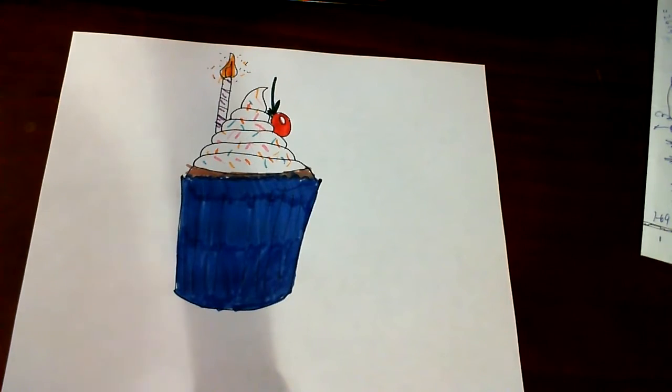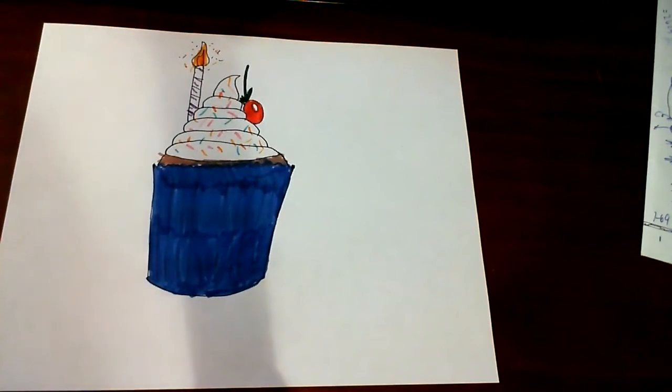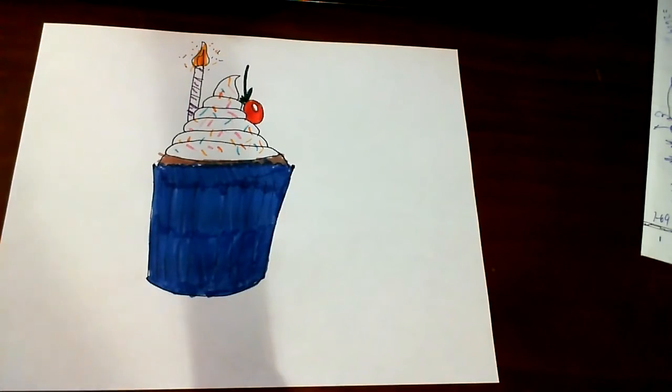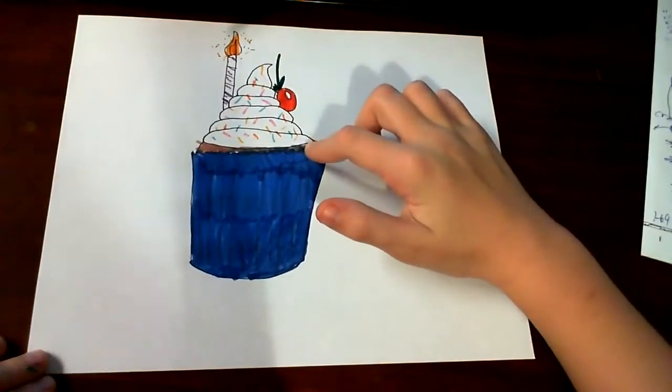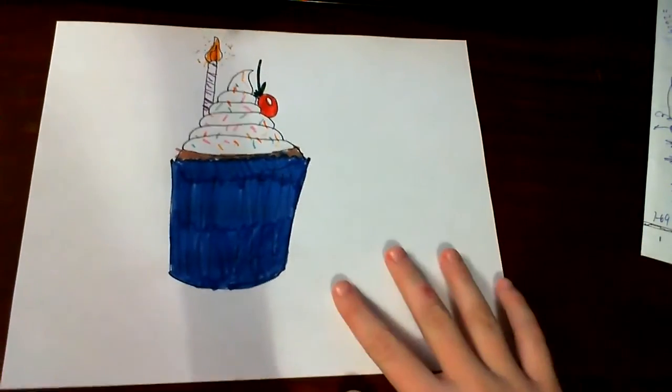And if you want for the frosting, you can leave it white. I'm going to leave it white, but it's up to you if you want to make it like what did I have on the front cover, a pink frosting. That's fine. If you want, but usually if you have a chocolate cake it's usually vanilla frosting. I'm pretty sure that's how life works.